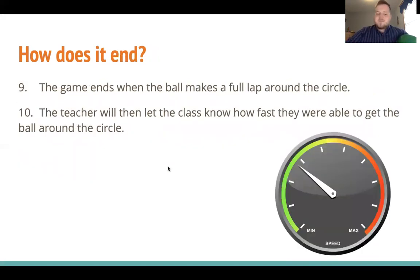So how does the game end? The game ends when the ball makes its way around the circle back to the initial student, meaning everyone has said at least one word. The teacher times the whole game and lets the kids know how fast they got the ball around the circle. This gives the kids an incentive to go as fast as they can, and maybe play a second or third time to get the highest score or fastest time without messing up.